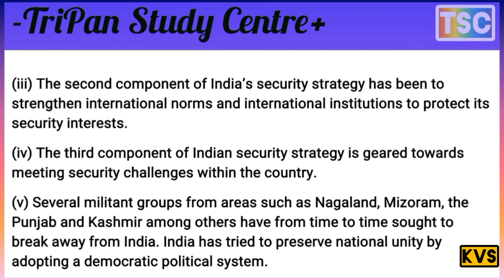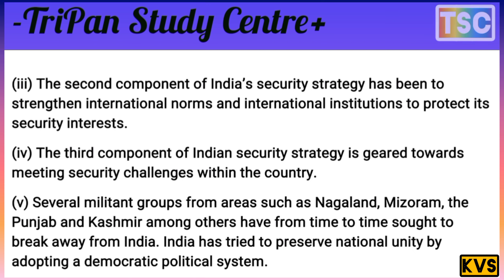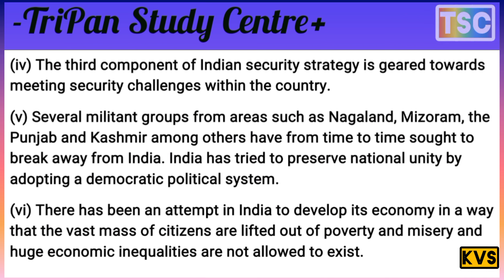The third component of Indian security strategy is to meet security challenges within the country. Several militant groups from areas such as Nagaland, Mizoram, Punjab, and Kashmir, among others, have from time to time sought to break away from India. India has tried to preserve national unity by adopting a democratic political system. There has also been an attempt in India to develop the country in a way that the vast majority of citizens are lifted out of poverty and misery, and stark economic inequalities are not allowed to persist.